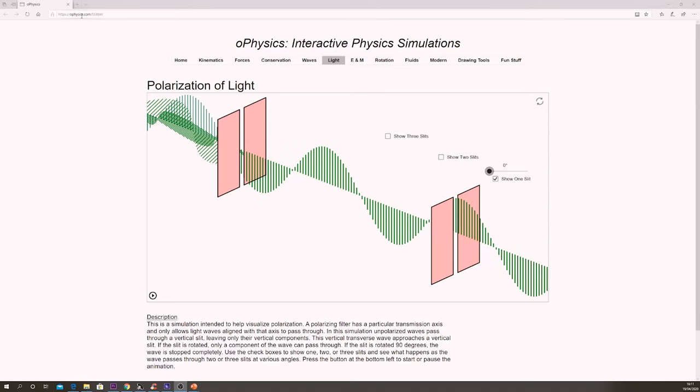So that's polarizing filters. You can try this out with this awesome oPhysics simulation. I'll put a link to this in the description. You've got your unpolarized light first of all.